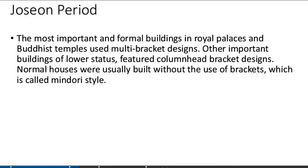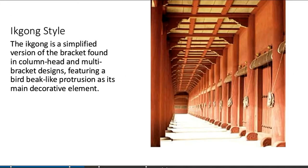In the Joseon period, the most important and formal buildings in royal palaces and Buddhist temples used multi-bracket design. Other important buildings of lower status featured column head bracket design. Normal houses were usually built without the use of brackets, called the Mindori style. The Ikgong is a simplified version of the bracket found in column head and multi-bracket designs, featuring a bird beak-like protrusion as its main decorative element.